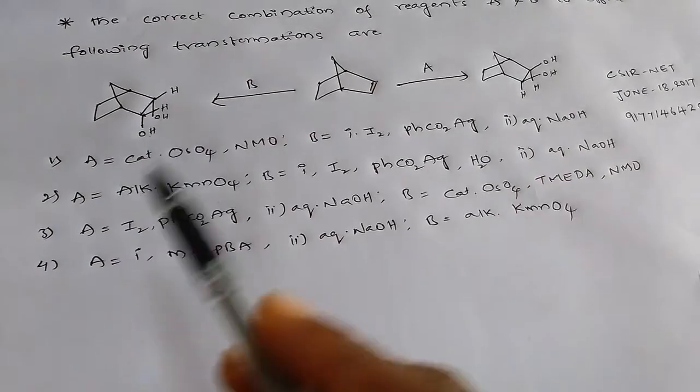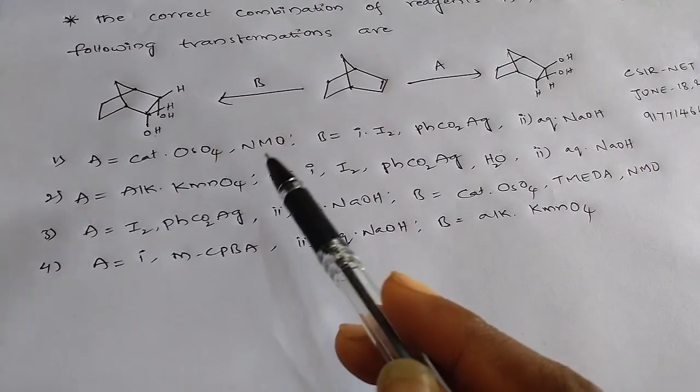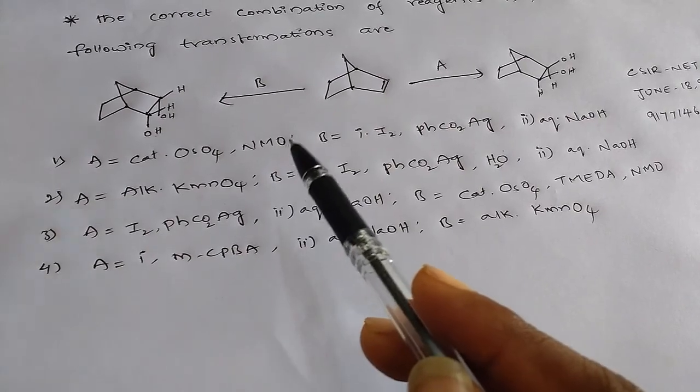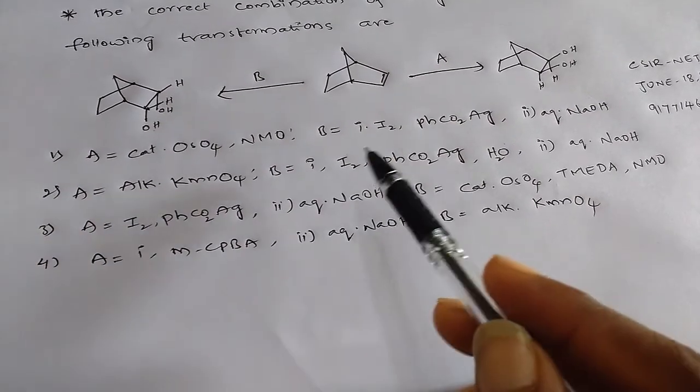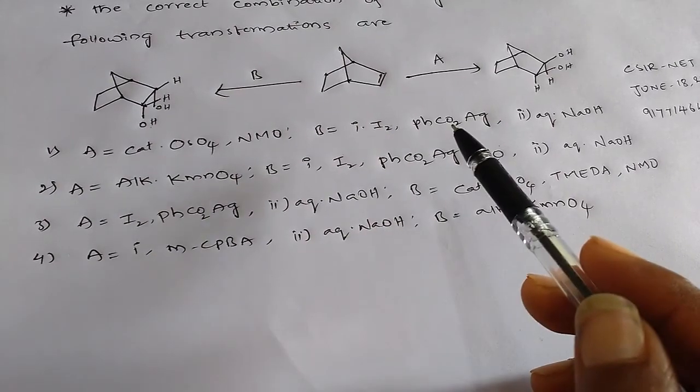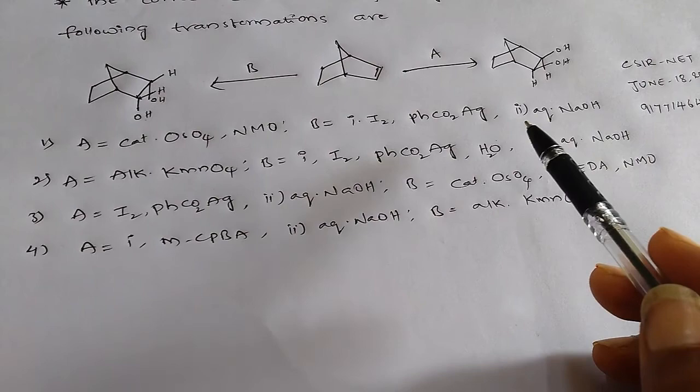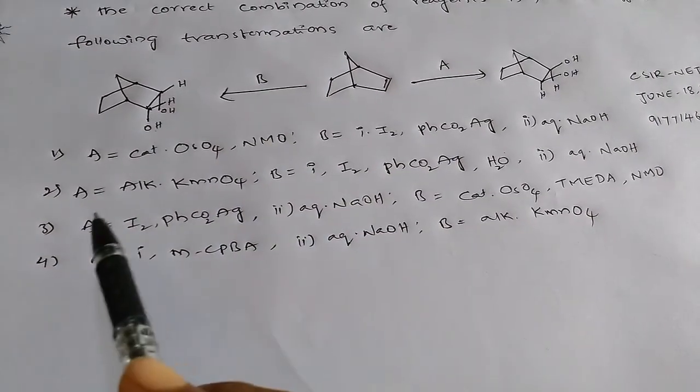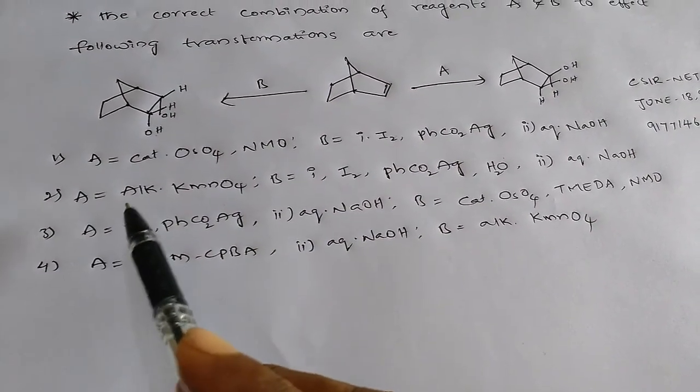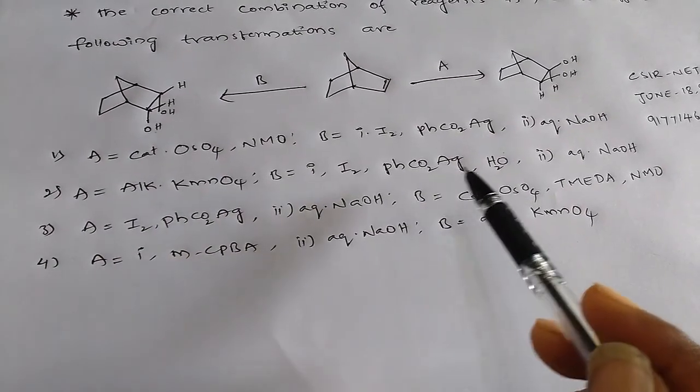So first option: A is catalyst osmium tetroxide and N-methyl morpholine N-oxide (NMO), and B is iodine and silver ester with aqueous NaOH. Second option: A is osmium permanganate and B is iodine and silver ester with aqueous NaOH.